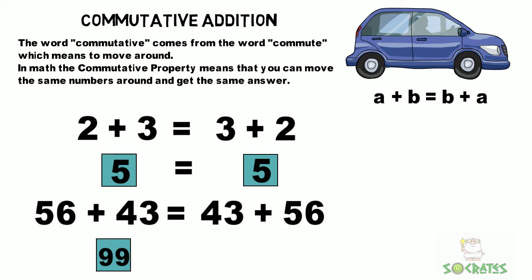And 43 plus 56 also equals 99. And that's the commutative property.